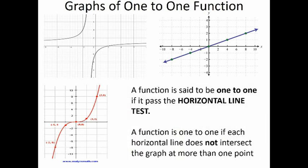we use the horizontal line test. A function is one-to-one if the horizontal line does not intersect the graph at more than one point. The horizontal line test uses a line parallel to the x-axis.